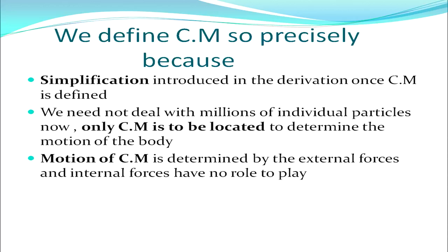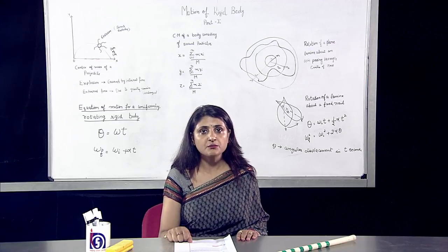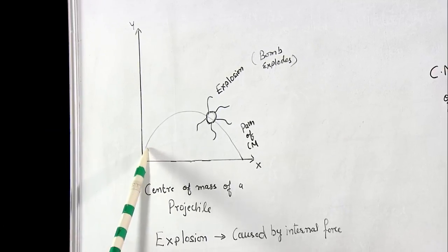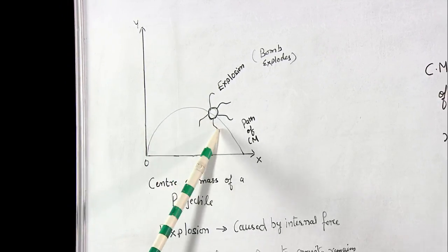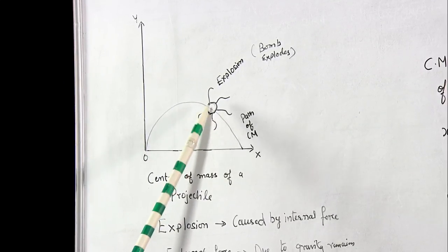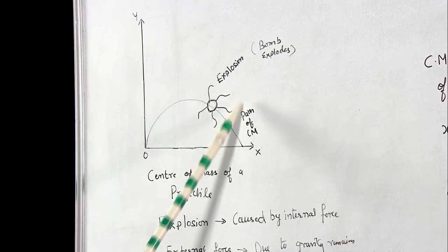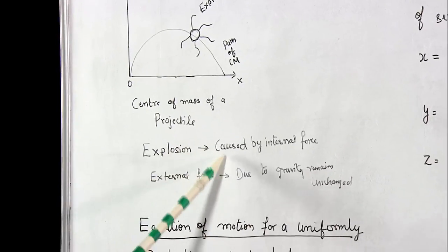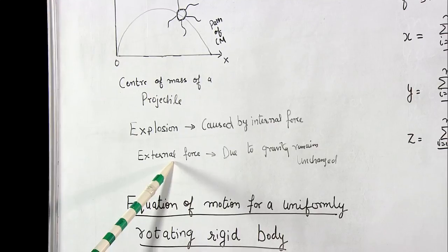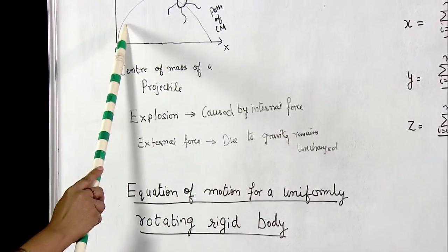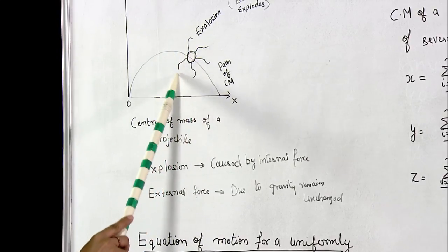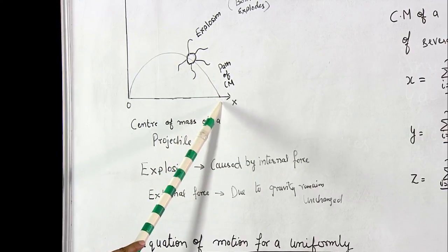The motion of CM is determined by external forces and internal forces have no role to play. Let's consider the path of CM in the case of projectile motion. Consider a bomb which is thrown and follows projectile motion, but the bomb explodes midway. All the fragments are distributed in the air, but the path of the CM remains unchanged. The explosion is caused by internal forces while the external force due to gravity remains unchanged. Therefore the path of the CM remains a parabola — the same as in the original projectile motion.